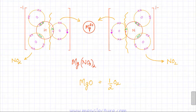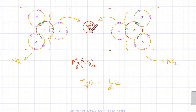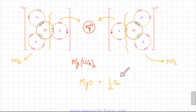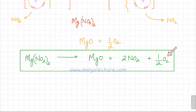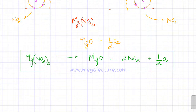One of the oxygens will be left over and eventually form an oxygen molecule. So the two nitrates decompose, producing two NO2 molecules. One oxygen bonds with the magnesium ion to form the ionic compound MgO, and the remaining oxygen forms half an O2 molecule. Writing the overall balanced equation: magnesium nitrate decomposes to form magnesium oxide, two NO2 molecules, and half an O2 molecule. That's the overall balanced equation for the decomposition of a group 2 nitrate.